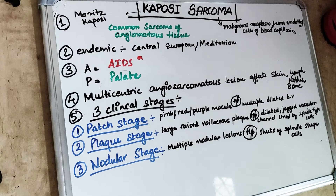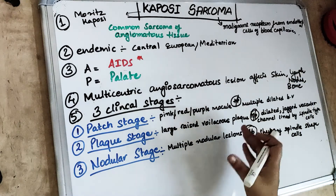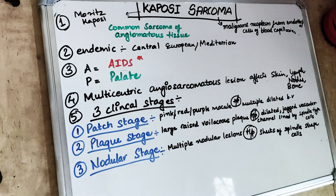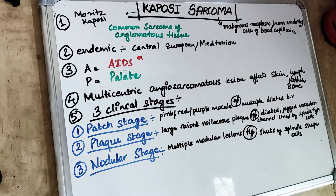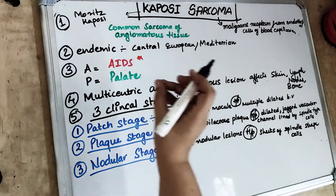Welcome back to the 5 in 5 series, where we cover each topic under 5 headings in 5 minutes. Today's topic is Kaposi Sarcoma. So this is basically a malignant neoplasm which is arising from the endothelial cells of the blood capillaries. So talking about the Kaposi Sarcoma.